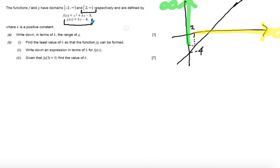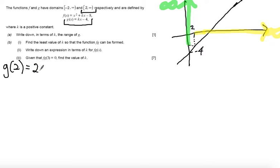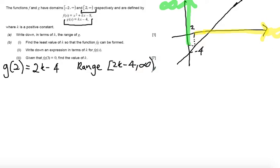What I need to know is my starting point where my range begins. To do that I'm going to find g(2) — I'm going to put that start point for the domain in. So that's going to give me 2k minus 4. And so my range can then be written as 2k minus 4 to infinity.